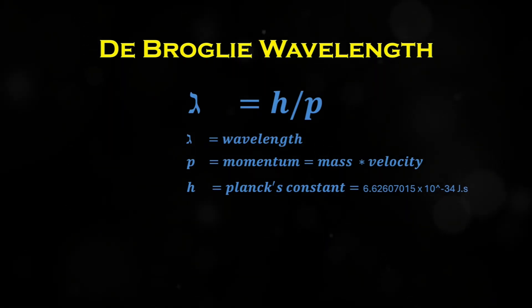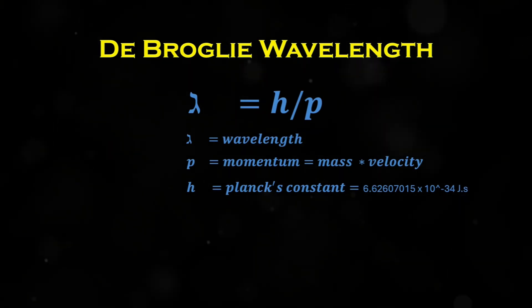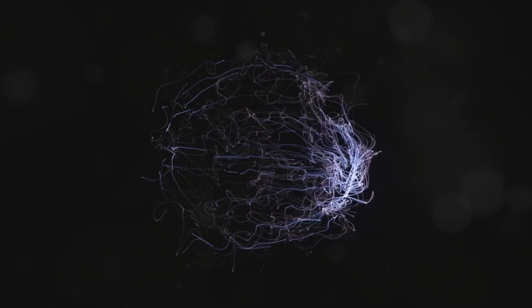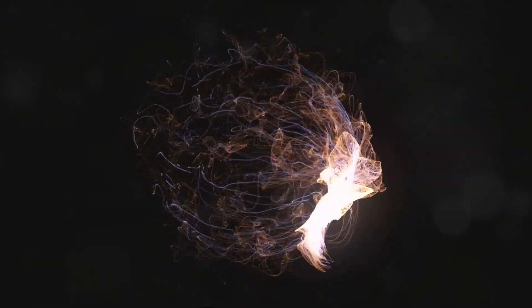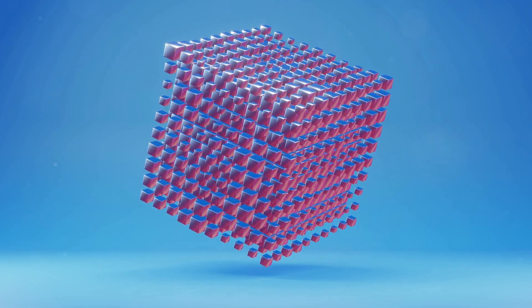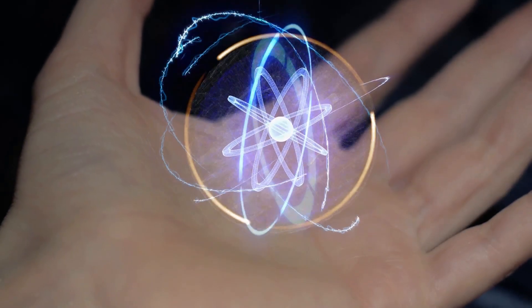Now why is Planck's constant so important? It tells us that in the quantum world, energy and momentum exist in discrete chunks, or quanta. It's like the smallest possible unit of quantumness that nature can have.